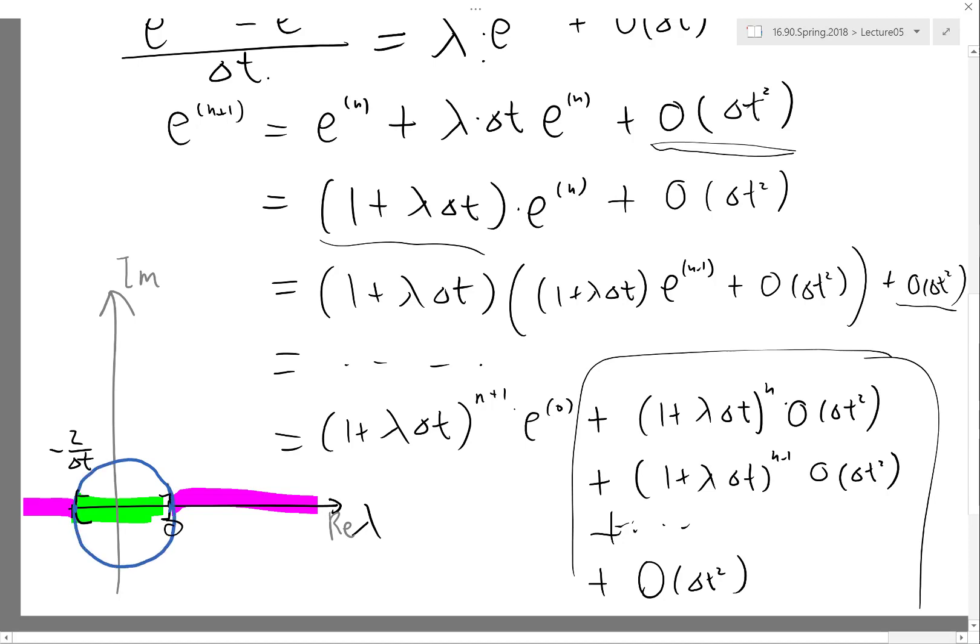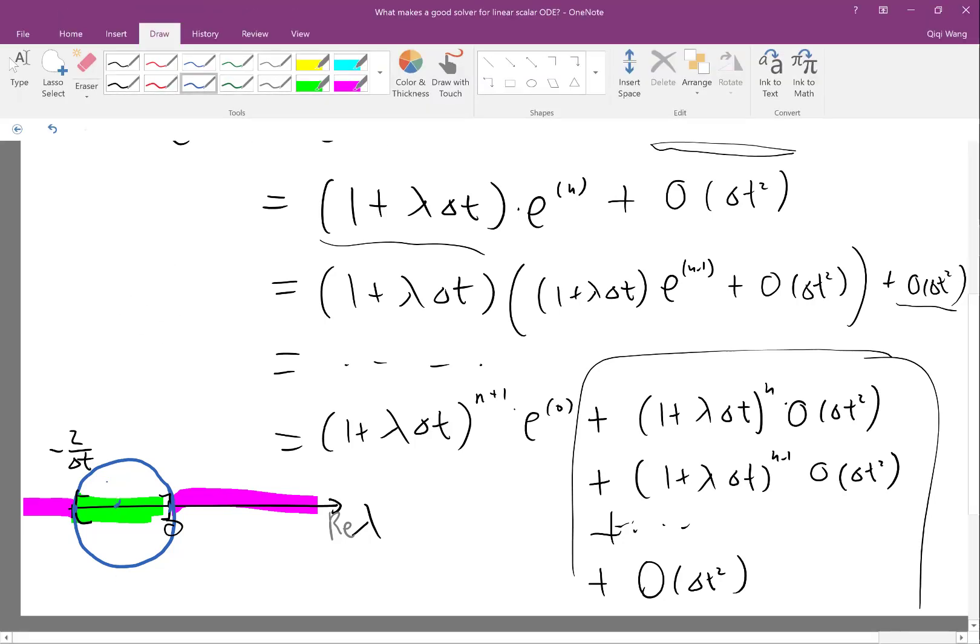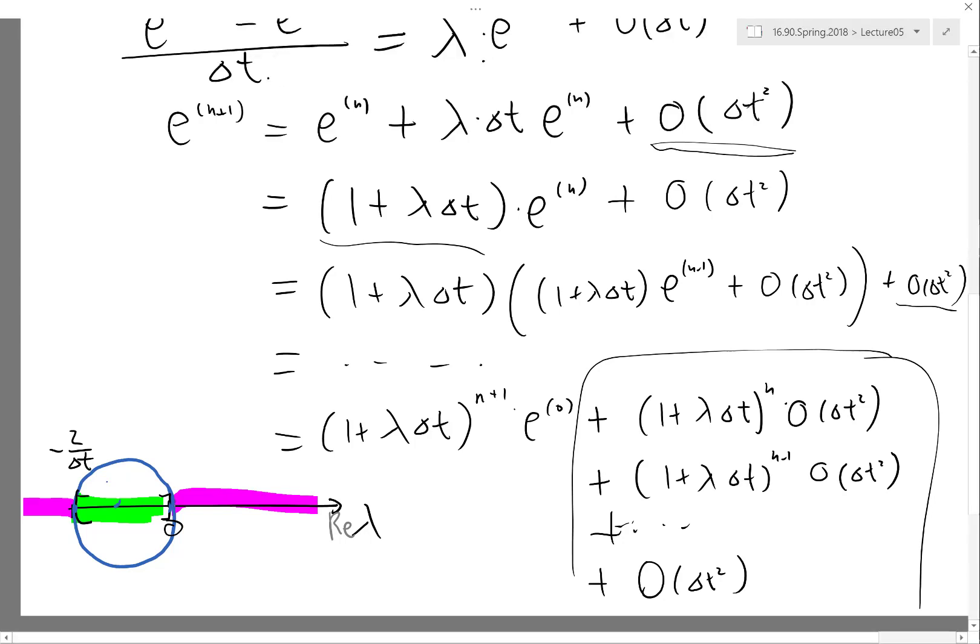It turns out it's going to be a circle. Makes sense, right? Because the center of the circle is actually minus one over delta t, because if lambda is actually minus one over delta t, the amplification factor is zero, right? And if you go up or down in the imaginary axis, going up or down, it'll be the same. Okay, so I think I'm drawing this in the wrong place—I should actually be drawing this over here.